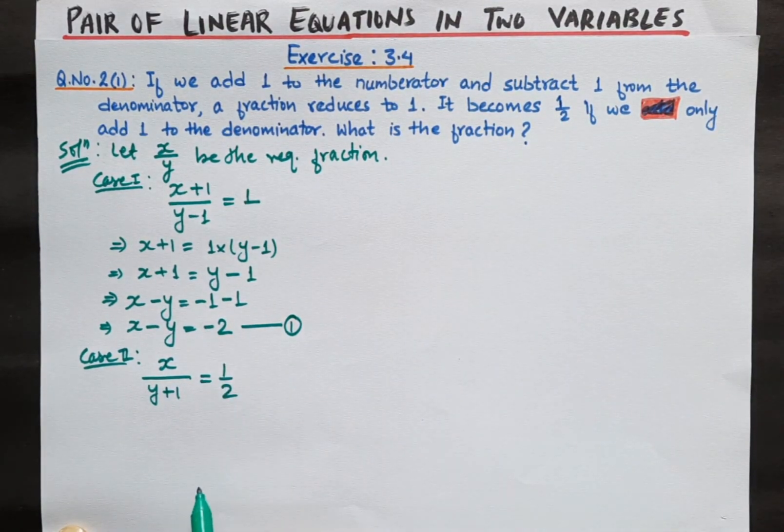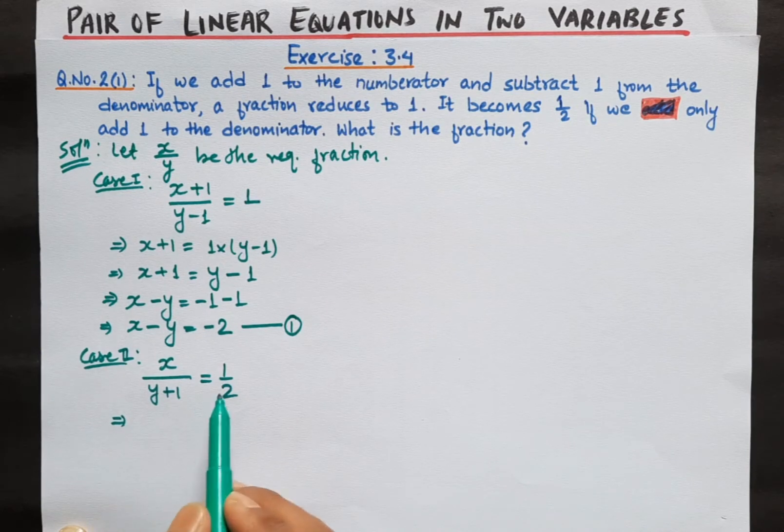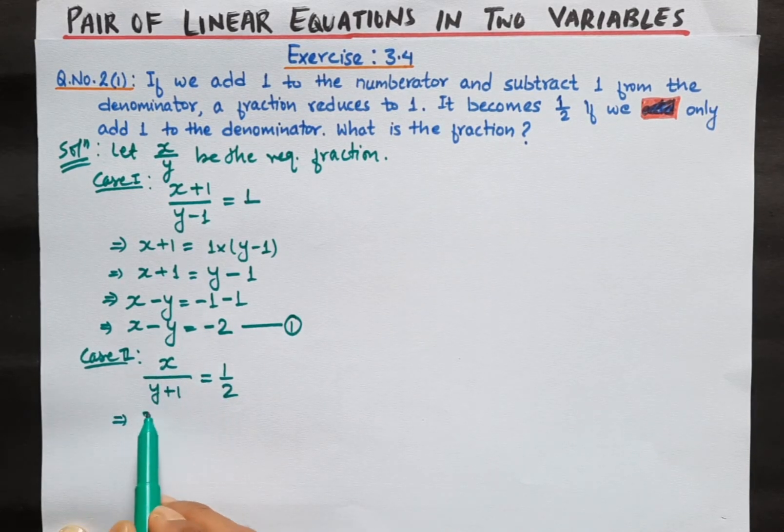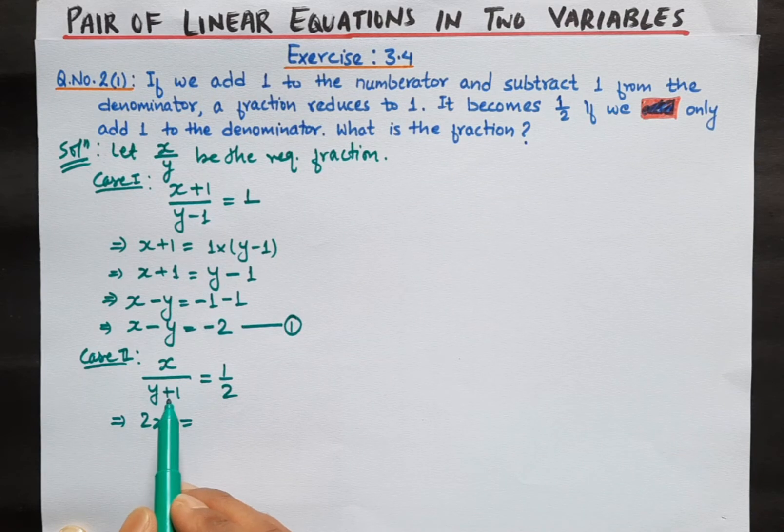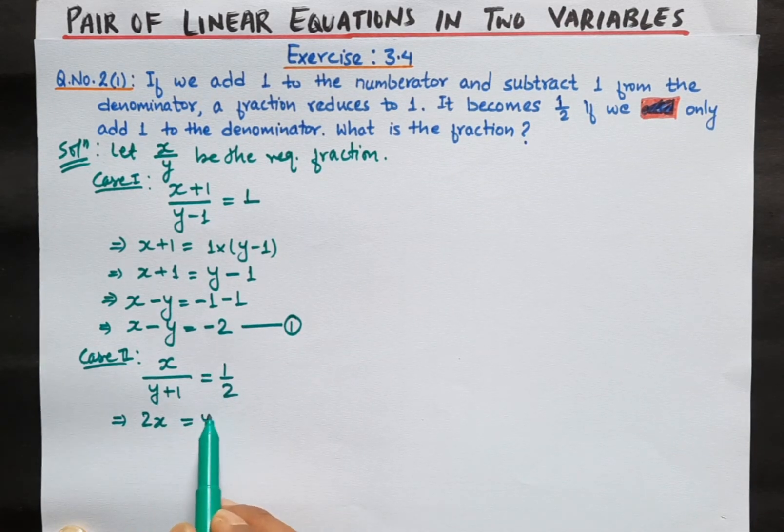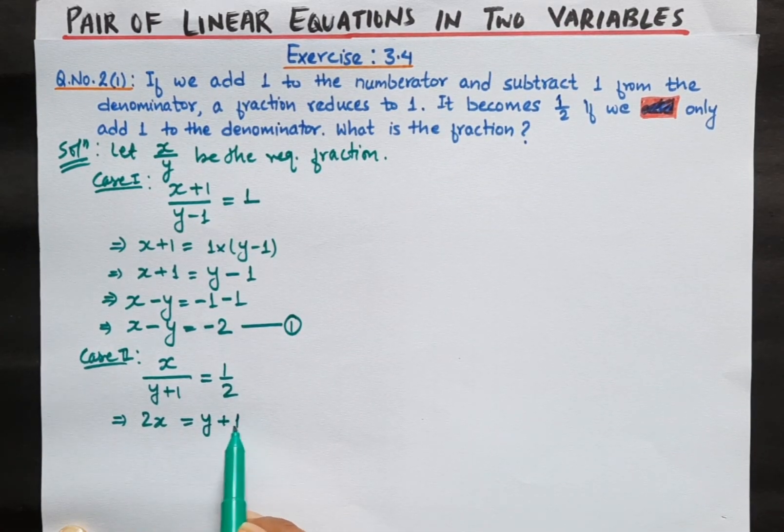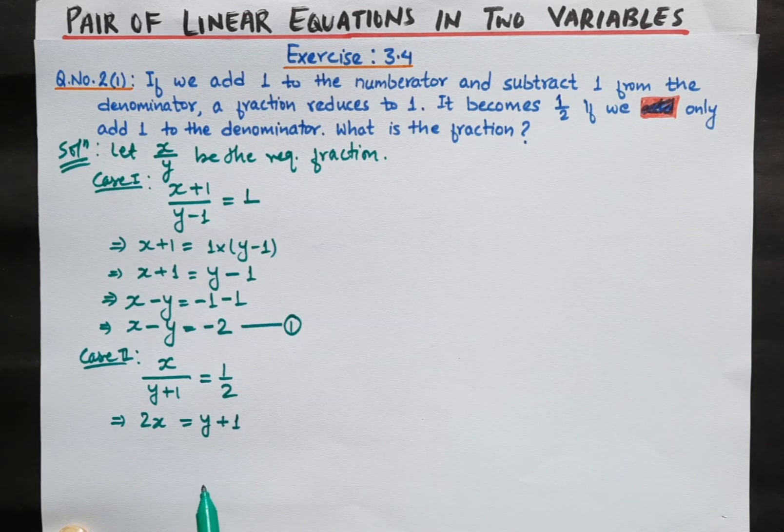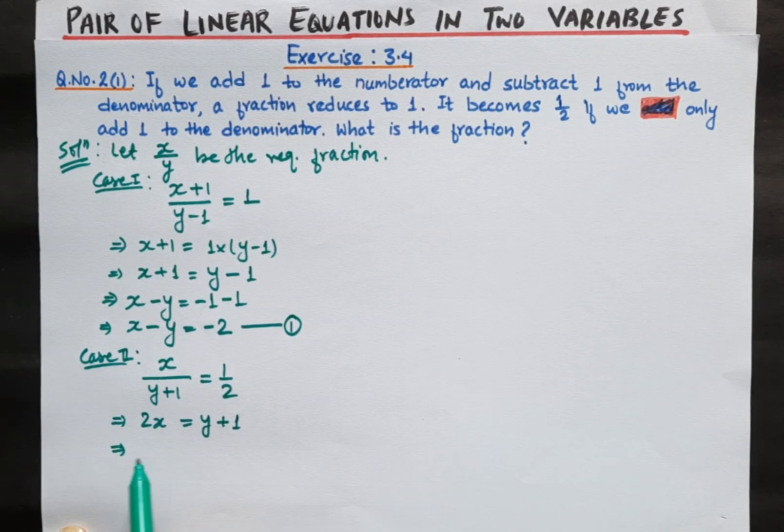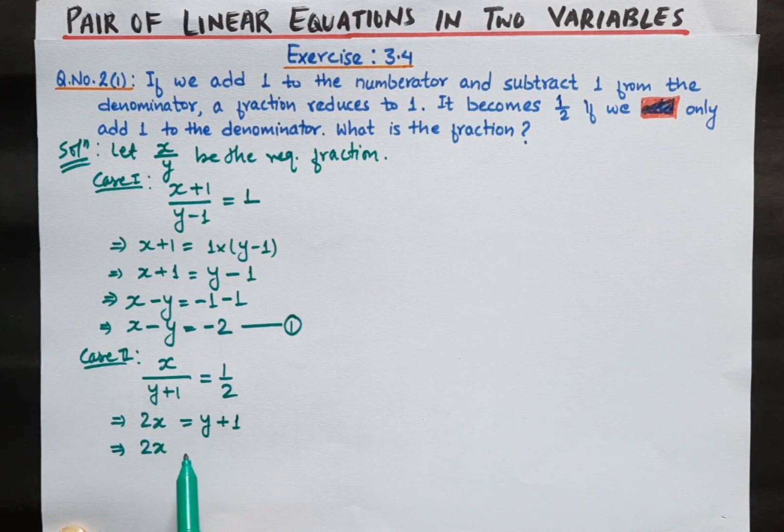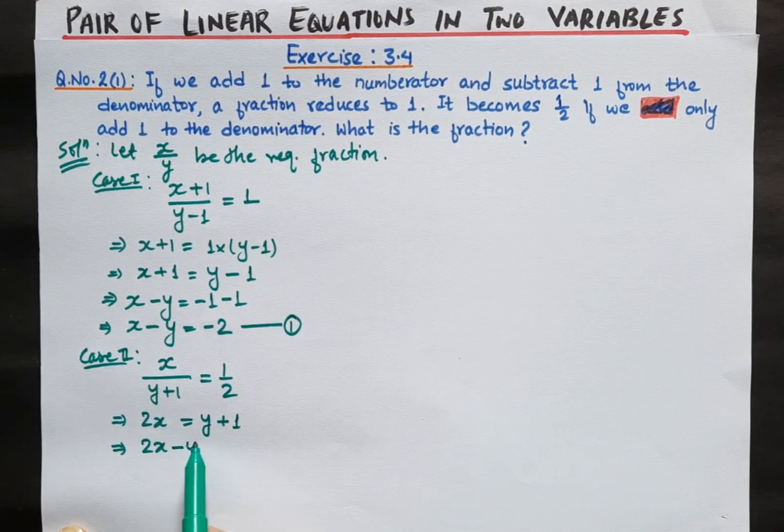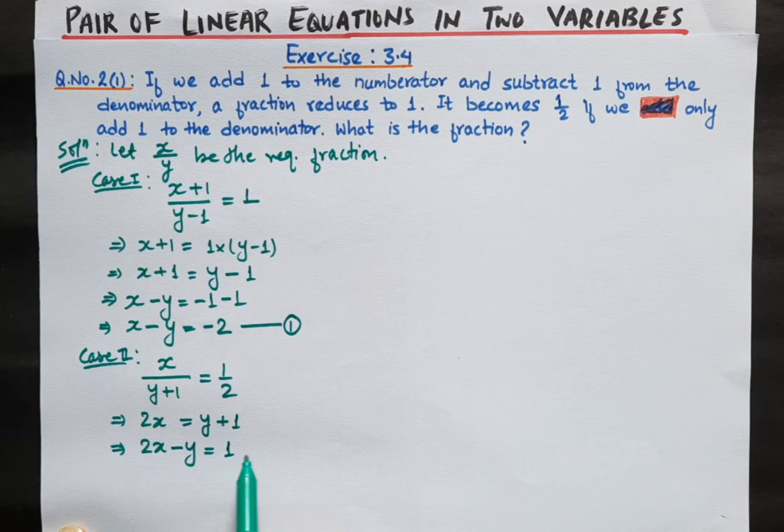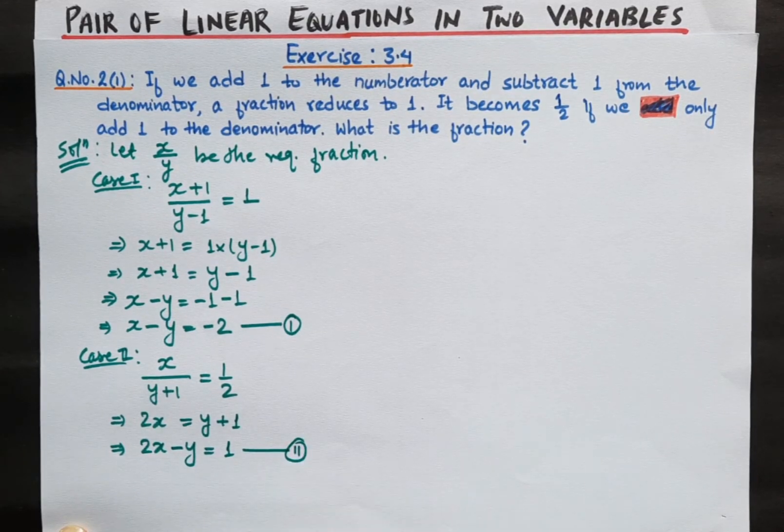So x over y plus 1 equals 1 by 2. Cross multiplying, we get 2x equals y plus 1. Now moving variables to the left hand side, 2x minus y equals 1. This is our equation number 2.